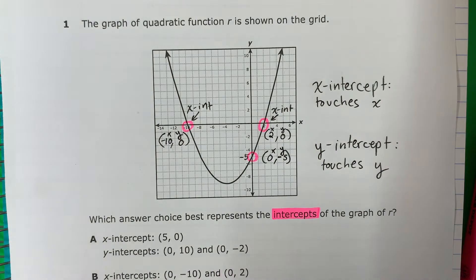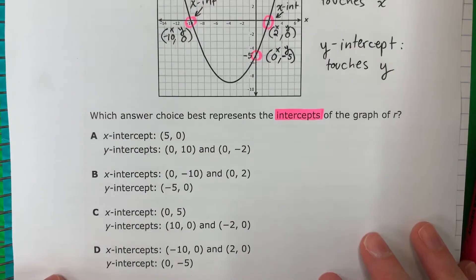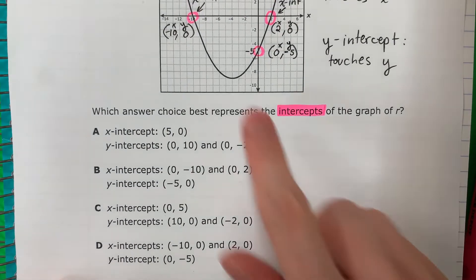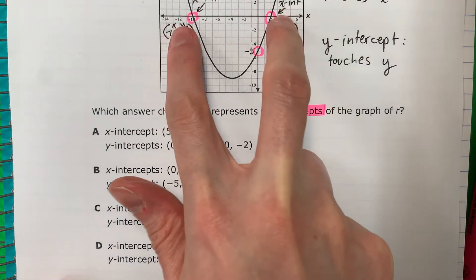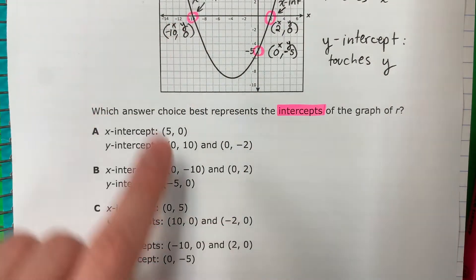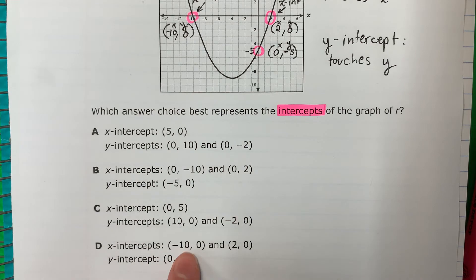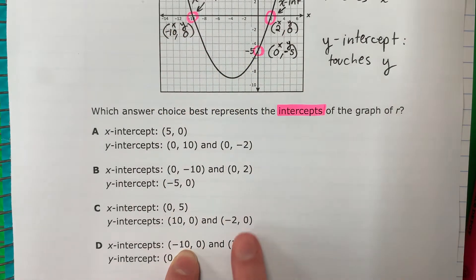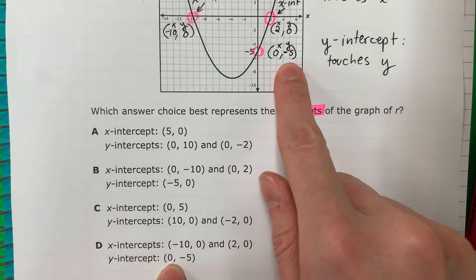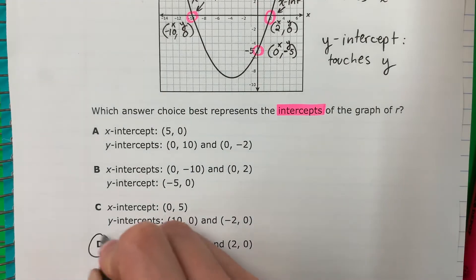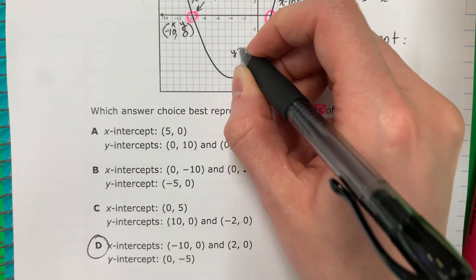So which one is my answer? I need these. Necesito estos. So x-intercept, I have 2. Tengo 2 x-intercepts. Negative 10 and 2. And then the y-intercept, 0, negative 5. This is the y-intercept. Let me write that down.